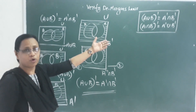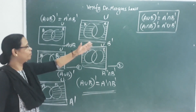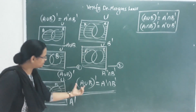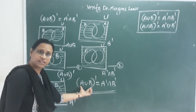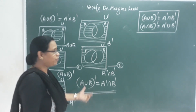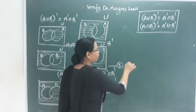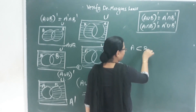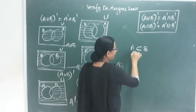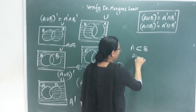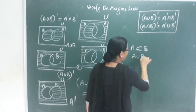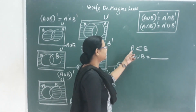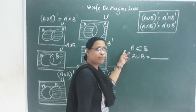Next, we will prove that if A is a subset of B, then B' is a subset of A'. We represent this using a Venn diagram where A is inside B.